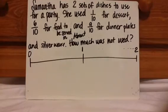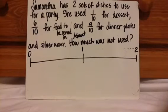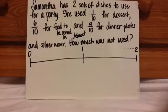I want you to do this example. Samantha has two sets of dishes to use for a party. She used 1/10 for dessert, 6/10 for food to be served in, and 9/10 for dinner plates and silverware. About how much was not used? There's two parts to this question.